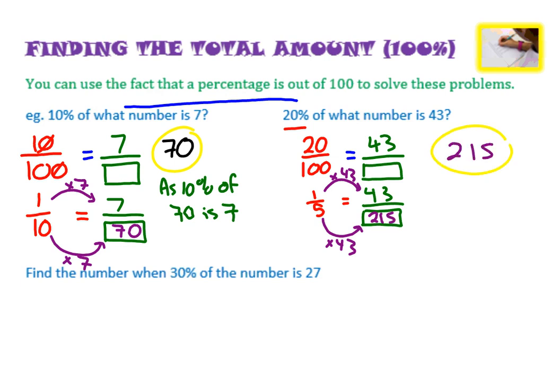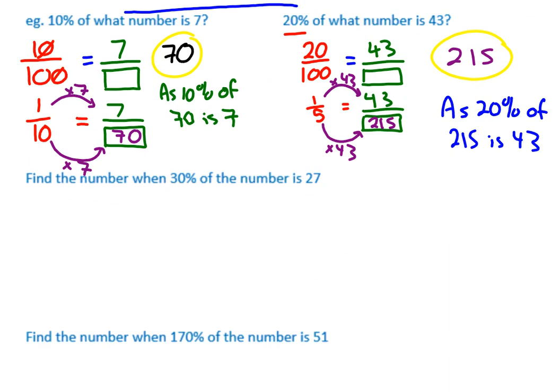So our answer therefore is 215. You don't need to write this stuff on the side, but maybe it's just helpful as a reference. As 20% of 215 is 43. It might just be helpful for you to refer back to. Feel free to pause and try the other ones and then I'll just write up the answers to these ones quickly.